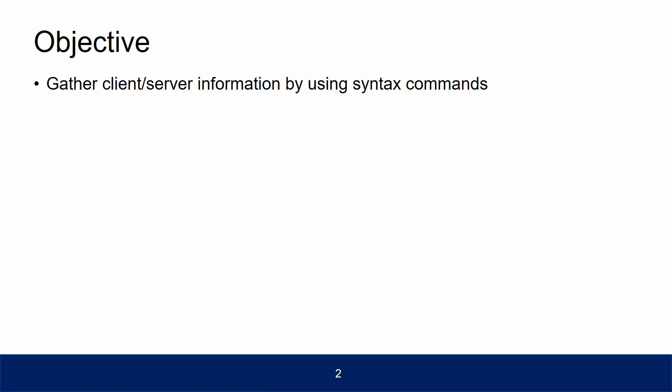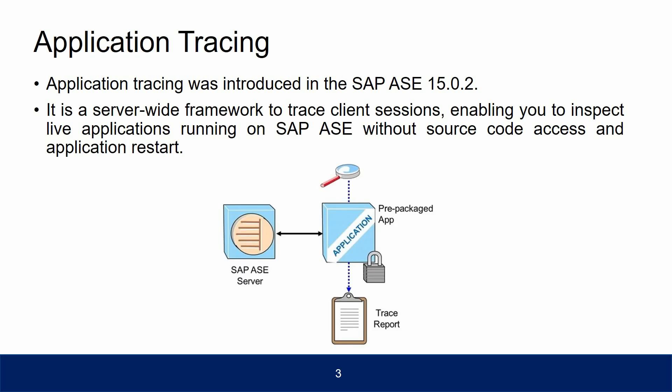The objective is to gather client-server information by using syntax commands. By the end of the session, we should be able to understand application tracing. Application tracing was introduced in Adaptive Server Enterprise 15.0.2.